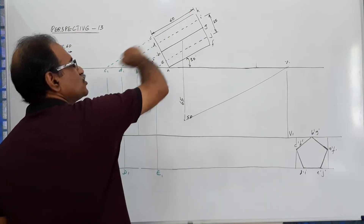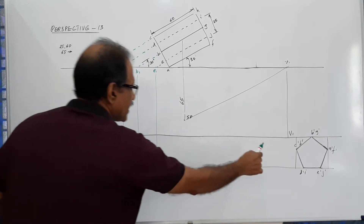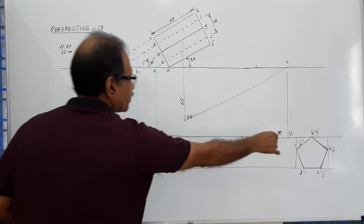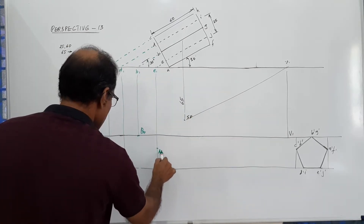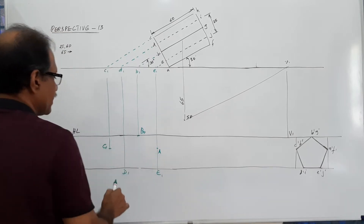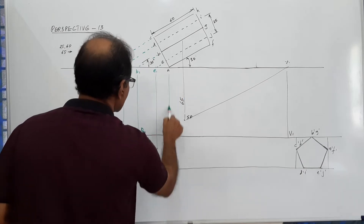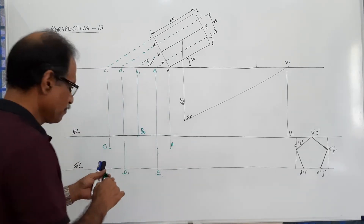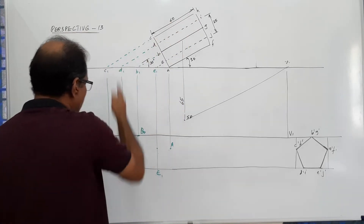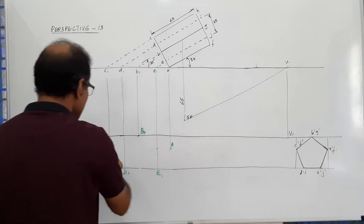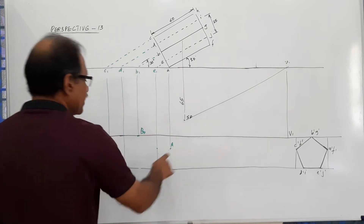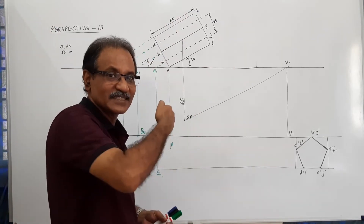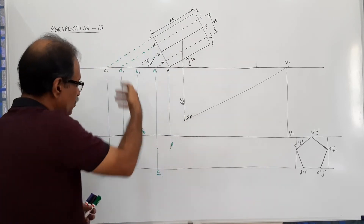After extending all these points to PP and dropping them down: at the level of C, C1; at the level of A, A1; at the level of E, E1; at the level of D, D1; at the level of B, B1. These front-face edges are extended so that they touch the picture plane line, and these are their perspectives.